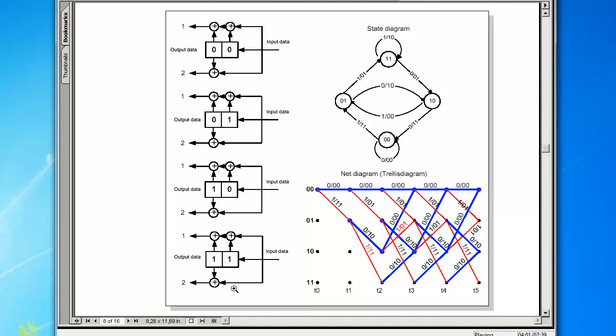The state diagram, shown in the illustration, describes completely the system of rules of the convolutional encoder represented here.